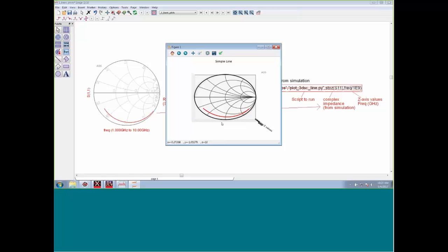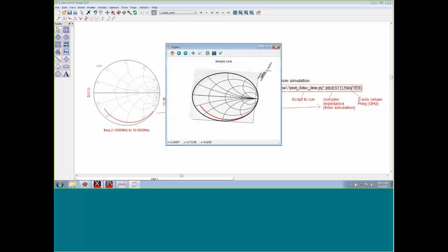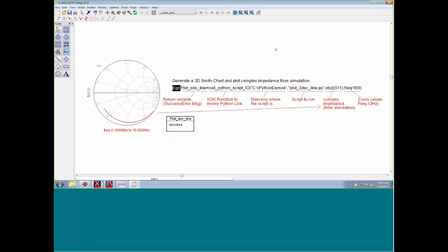If you look at this line over here, this is the simulation result in ADS. This is the same line over in Python. But the difference is, since this is a Smith tube, I can extend the Z dimension here. This is the Z dimension, and in this case, the axis is frequency in gigahertz. I can plot this, move this plot around, zoom in, zoom out, look at it differently.